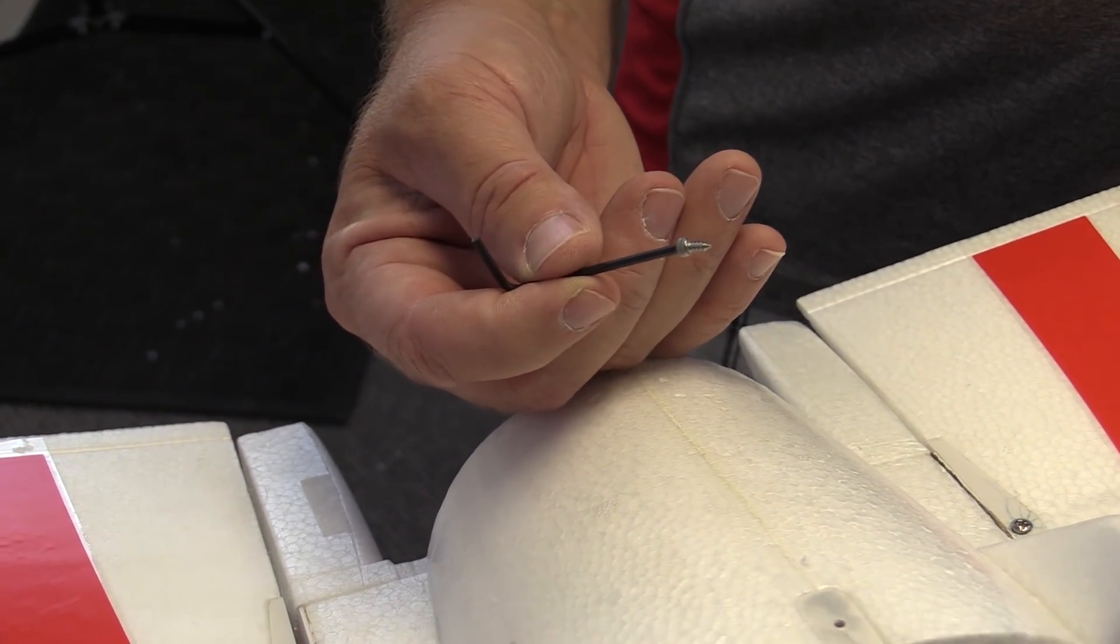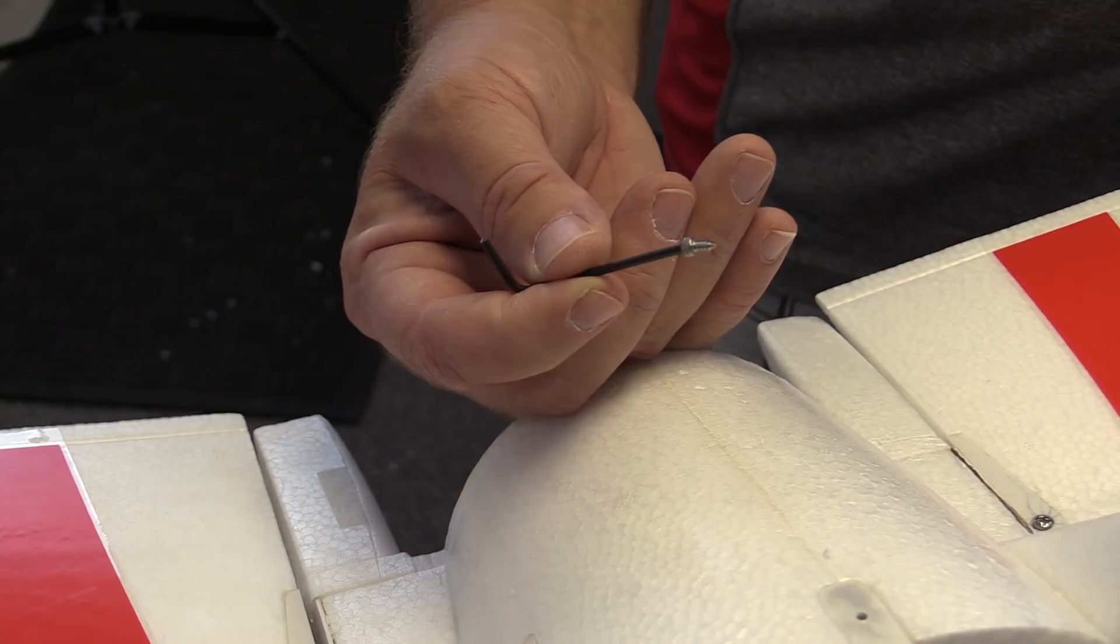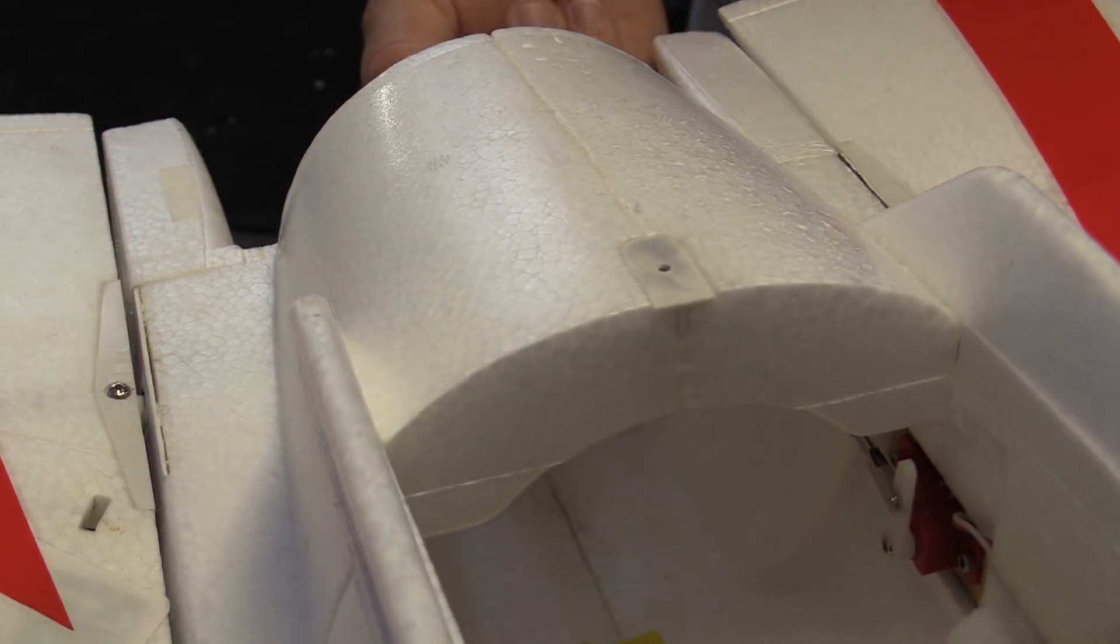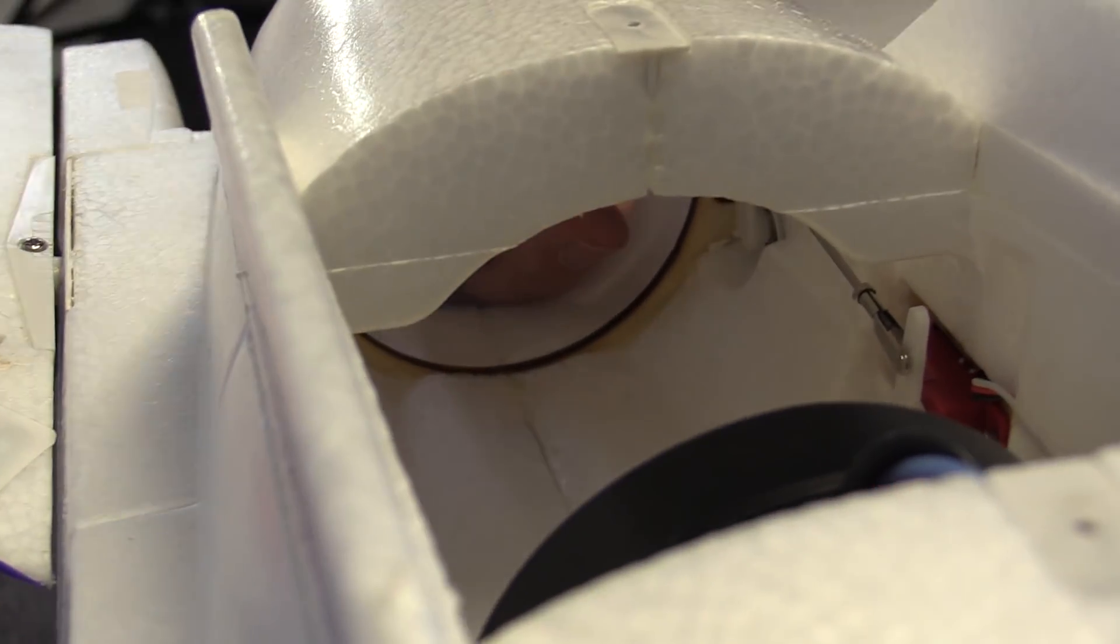Alright, we have our screw here on our two millimeter hex wrench. This retains the arm onto the stab pivot tube so we're going to go ahead, we have the linkage where we want it, we have the radio hot, we've checked the trim, adjusted the clevises and now we're going to screw the horn. With the wrench you just want to turn that right in until you just feel it get nice and snug. You can check that there's not much play in the stab.